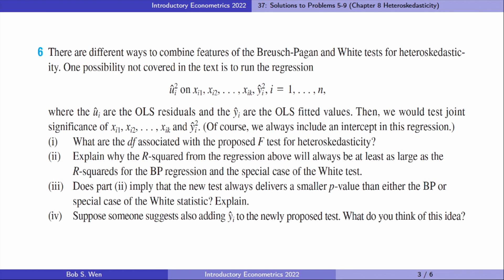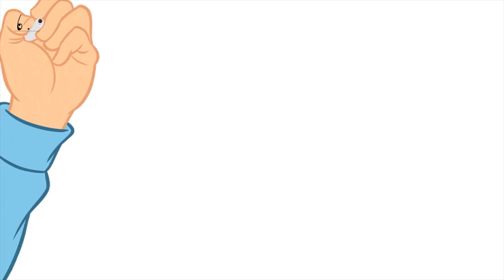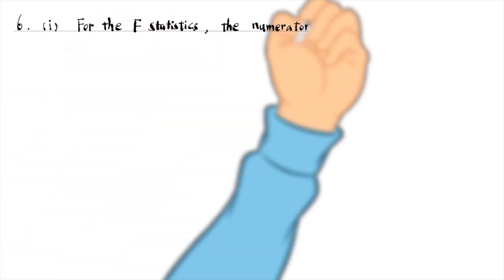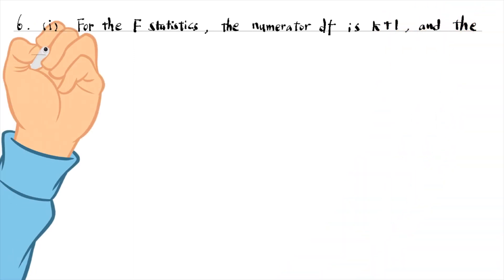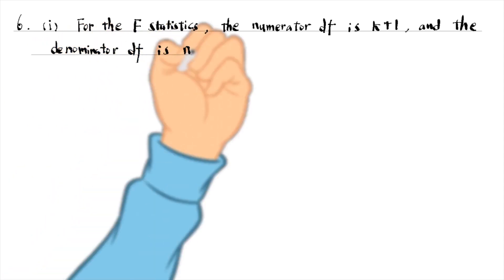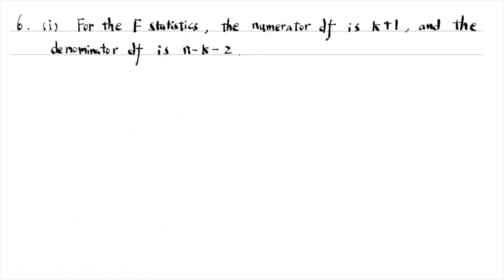Let's find the answer to problem six. For the F-statistics, the numerator degree of freedom is the number of restrictions. It is k plus 1, because there are k x's and one value of y-hat squared. The denominator degree of freedom is the degree of freedom of the unrestricted model. It is n minus k minus 2, because the number of parameters to be estimated is k plus 2, including the intercept.